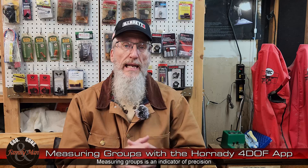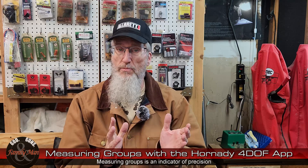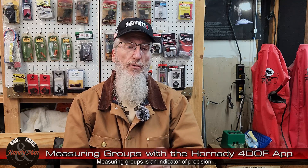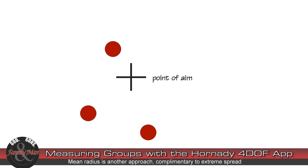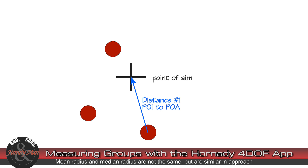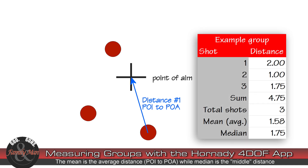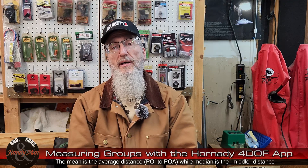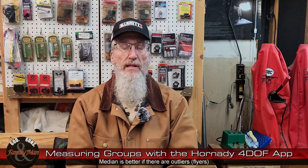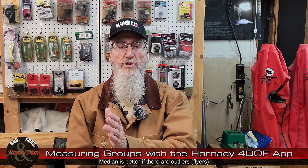Another method I really like is known as mean radius, or sometimes median radius. The reason I don't use those very much is because it's a time-consuming and tedious process to make all these measurements and calculations, and the tediousness only increases as groups get larger — five shot, ten shot groups, etc.